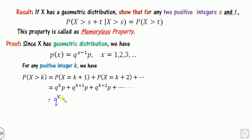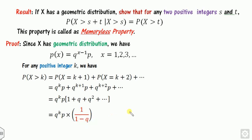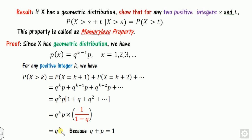From the sum, q^k and p are common factors. The remaining terms are 1 + q + q² + ... up to infinity. Since this is an infinite geometric progression, the sum is a/(1−r), where the first term a is 1 and the common ratio r is q. So the sum becomes 1/(1−q). Since p + q = 1, we have 1−q = p. This p cancels with the p factor, giving P(X > k) = q^k.